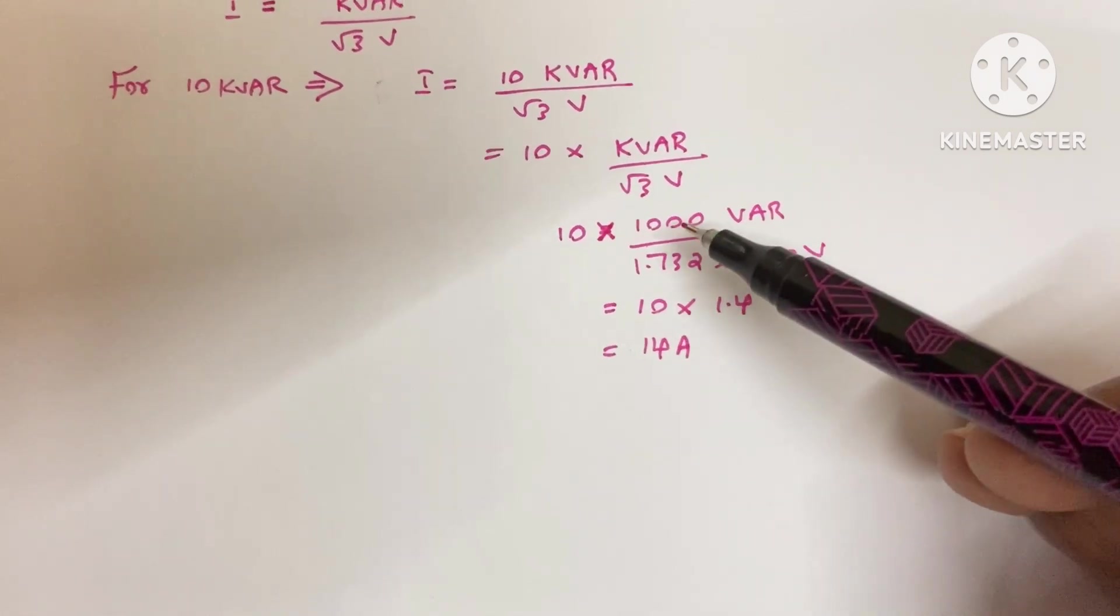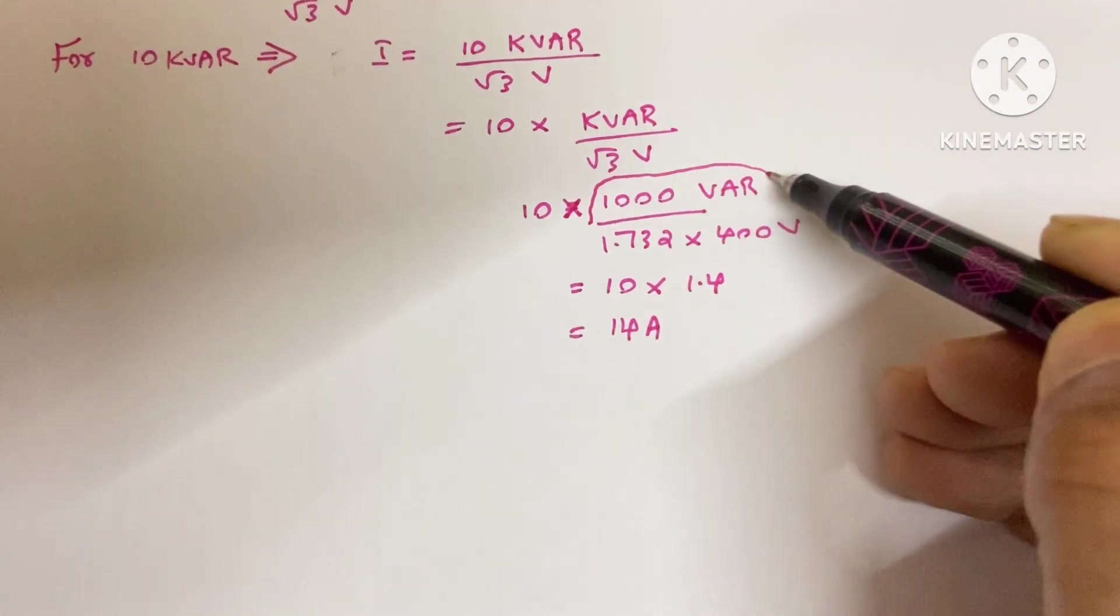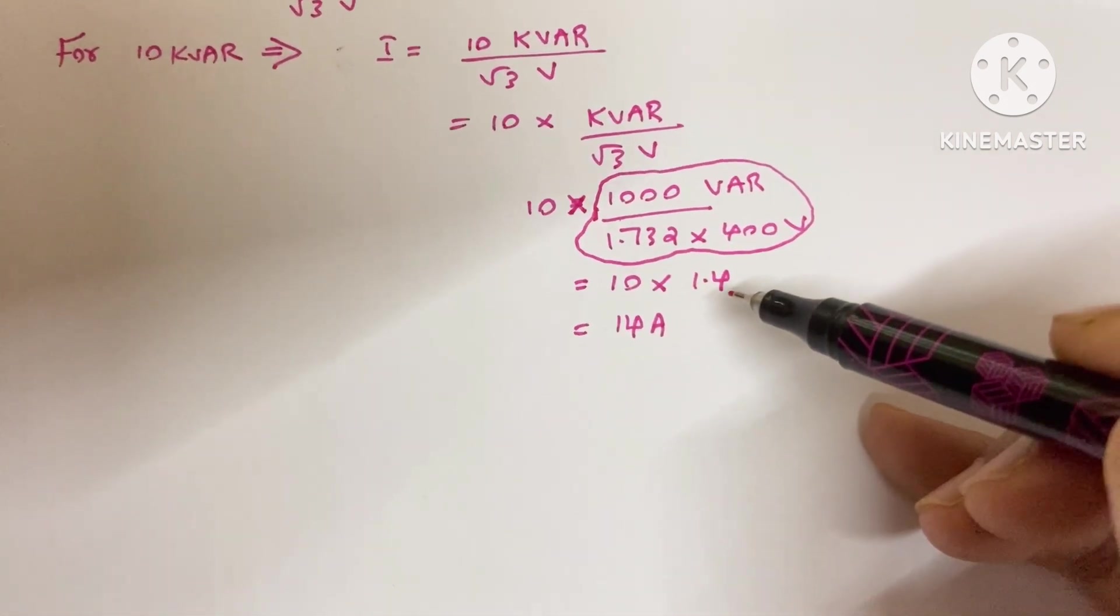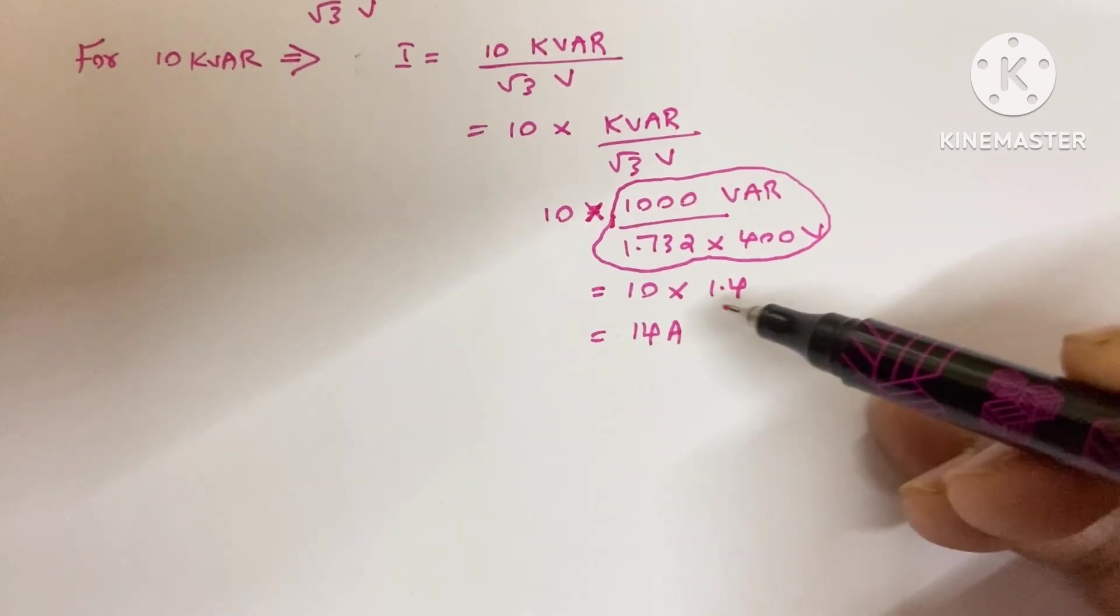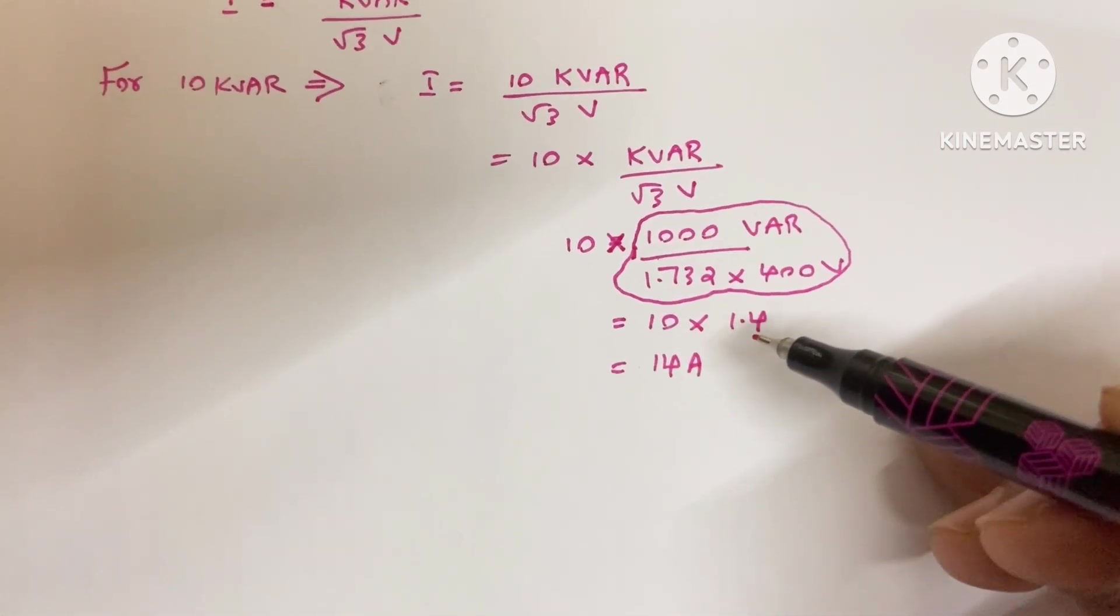When we work through this calculation, we get 1.4. Then 10 multiplied by 1.4 gives us 14 amperes. This is how we get 1.4. I already told you.